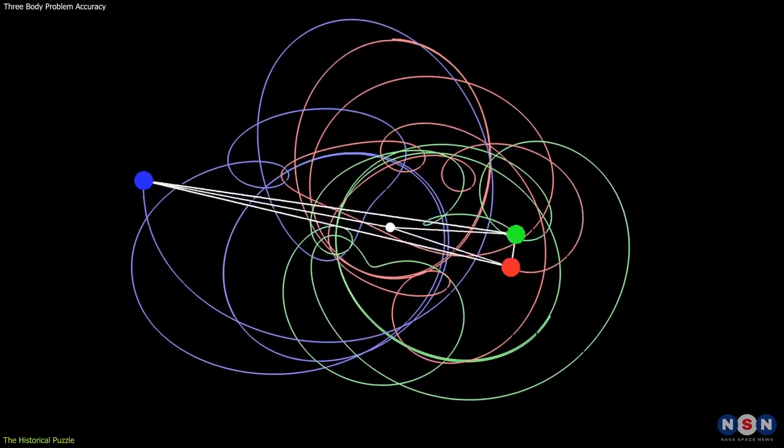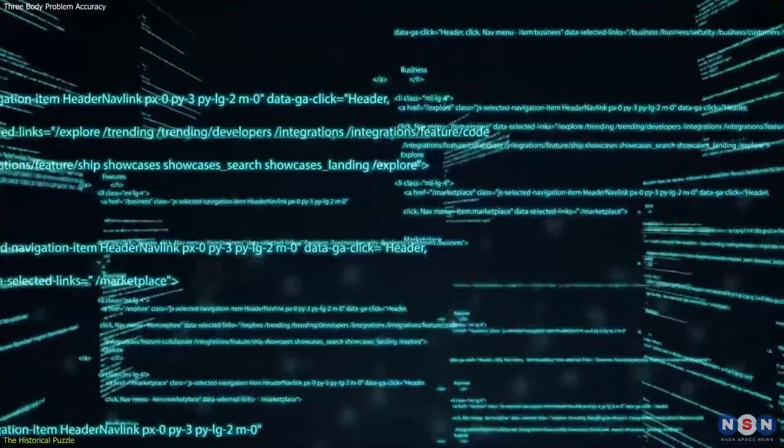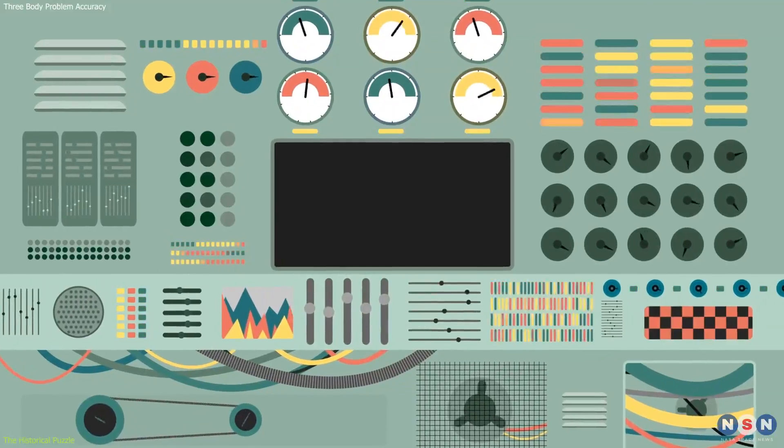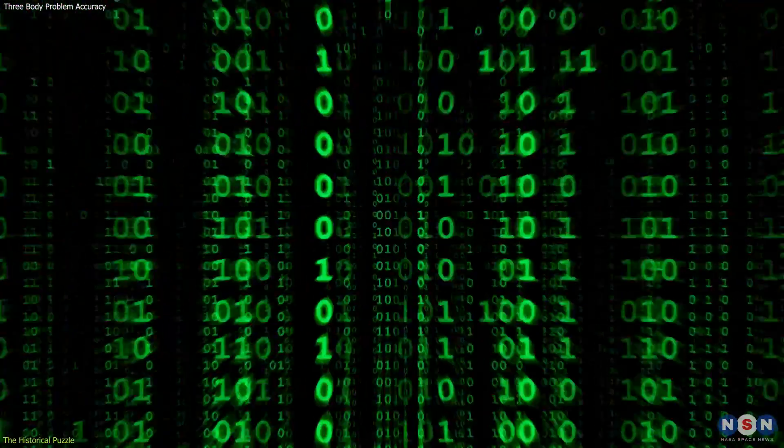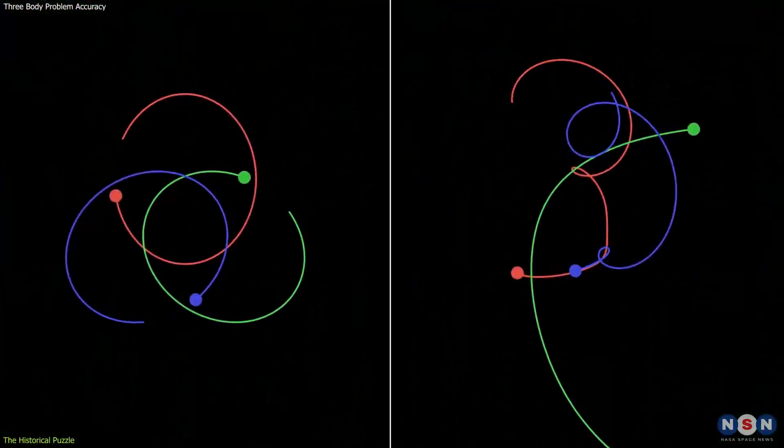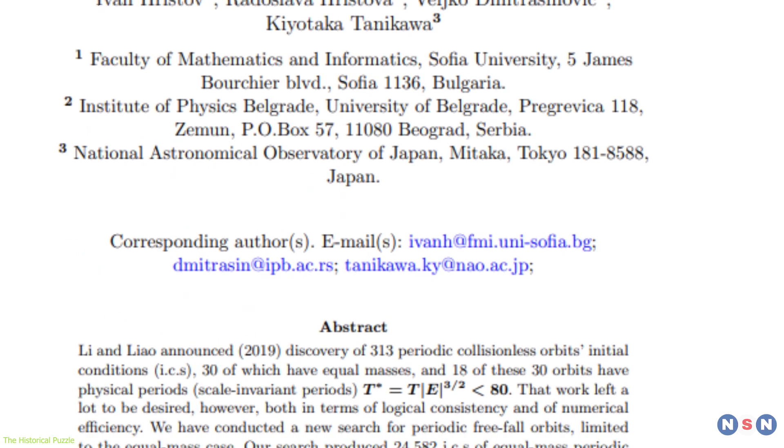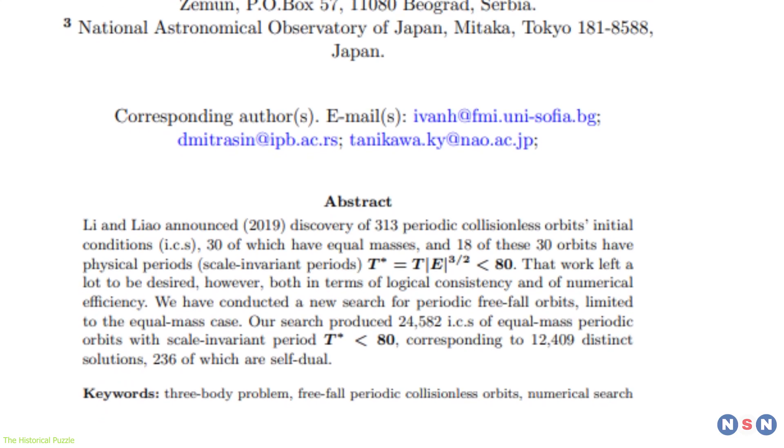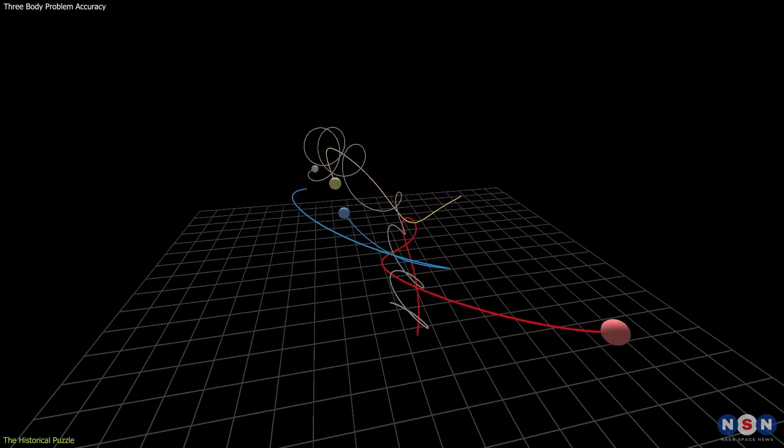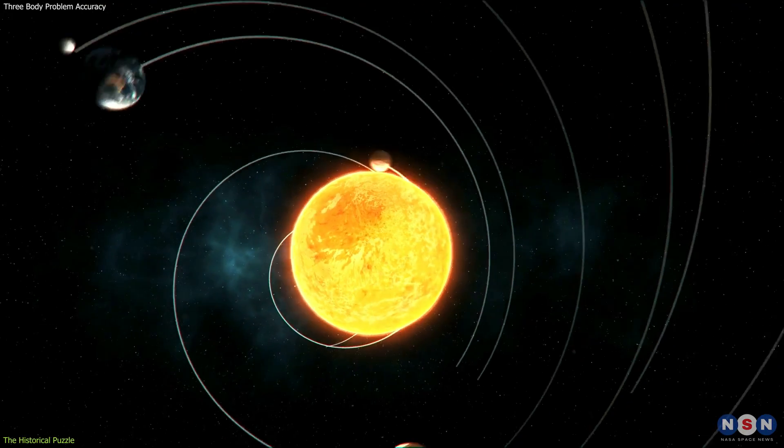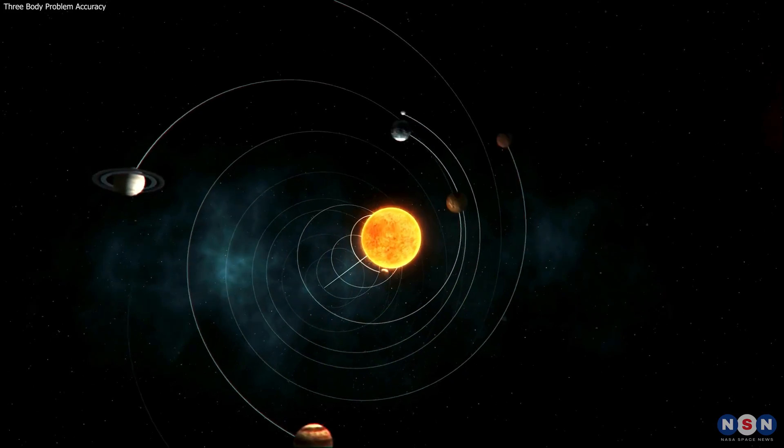The study of the three-body problem has evolved with advances in computational power and mathematical techniques. Modern supercomputers and sophisticated numerical methods allow researchers to simulate millions of potential scenarios, exploring the vast complexity of these interactions. Each new study, including the recent discovery of 12,000 new theoretical solutions, not only expands our understanding of this classical problem, but also enhances our ability to model and predict the behavior of celestial bodies in our universe and beyond.